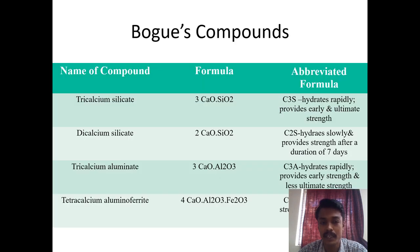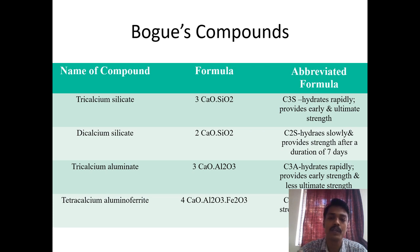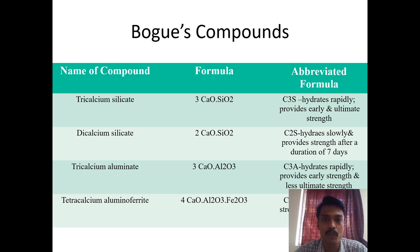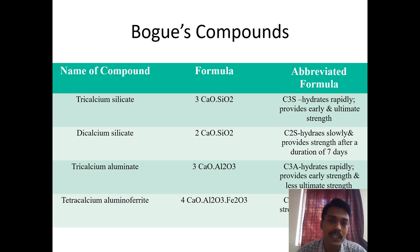These are the names of the compounds — you can remember the formula and abbreviated formula. These are called Bogue compounds, and they are actually complex compounds that form during the hydration of cement. In cement, it's not only a particular element; we are mixing different chemical components.